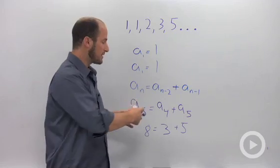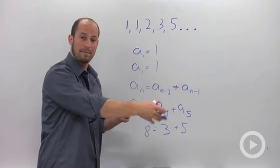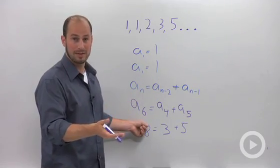So by just adding the two terms before it, which we can write as a sub n minus 1 and minus 2, together we are able to find terms in the Fibonacci sequence.